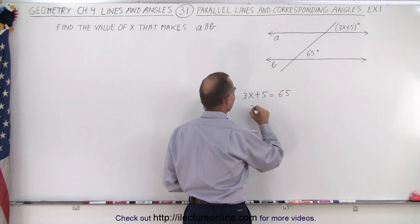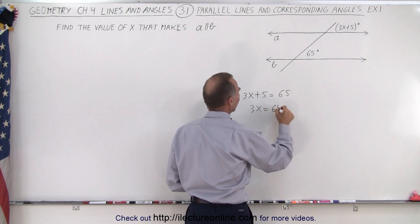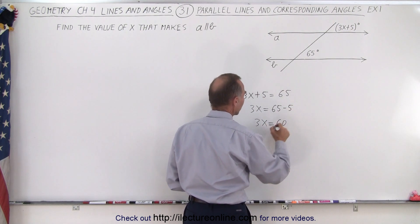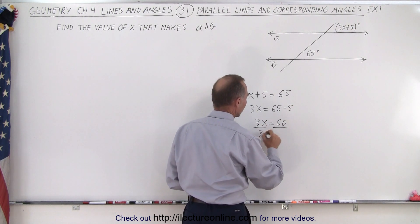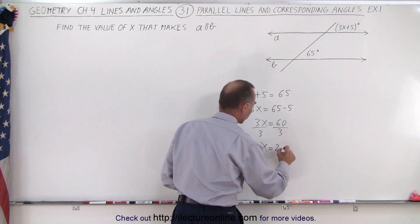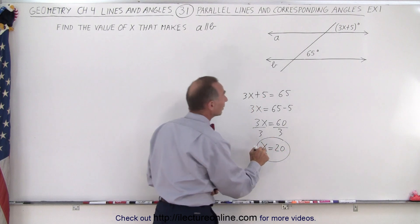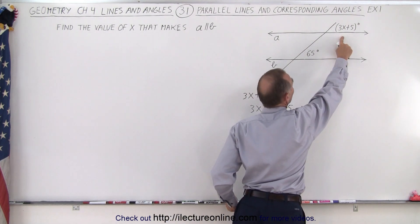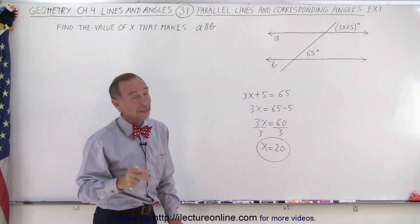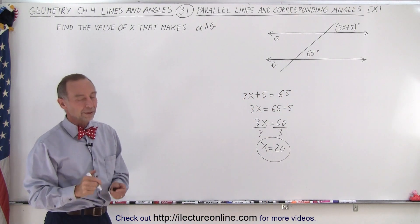So first we move the 5 across, we get 3x equals 65 minus 5, or 3x is equal to 60. And then we divide both sides of the equation by the numerical coefficient of x. So we get x equals 20. So when x equals 20, notice that 3 times 20 is 60 plus 5 is 65 degrees. Then the two angles will be congruent and that means that the two lines will be parallel.